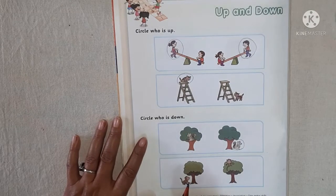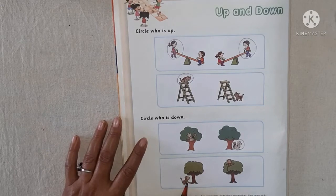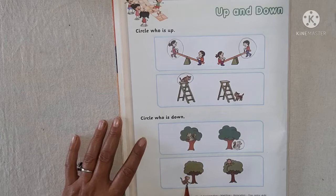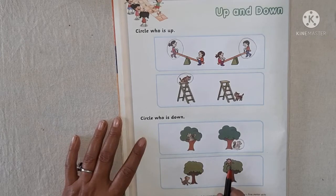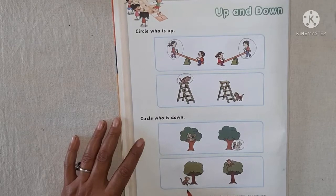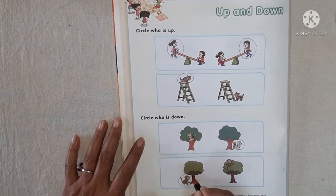Last picture. What is this? This is a monkey. And what is this? This is also a tree. This monkey is sitting down, and this monkey is sitting up. From these two pictures, in which tree is the monkey sitting down? In this picture, the monkey is sitting down. Now make a circle.